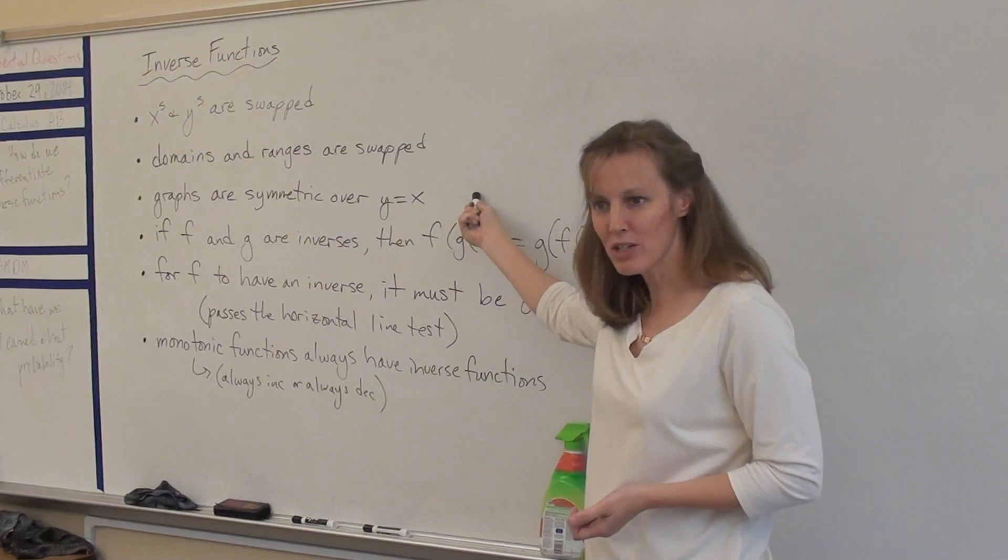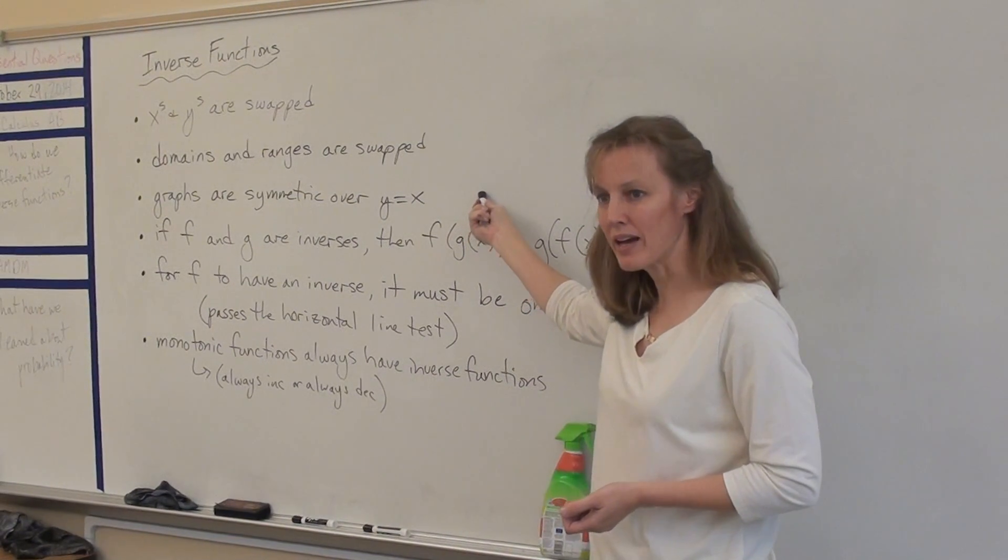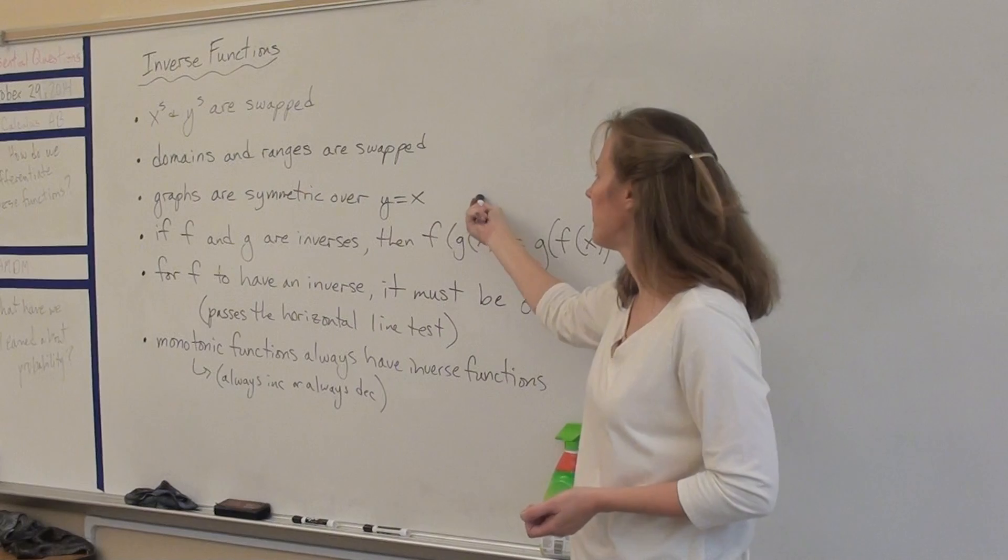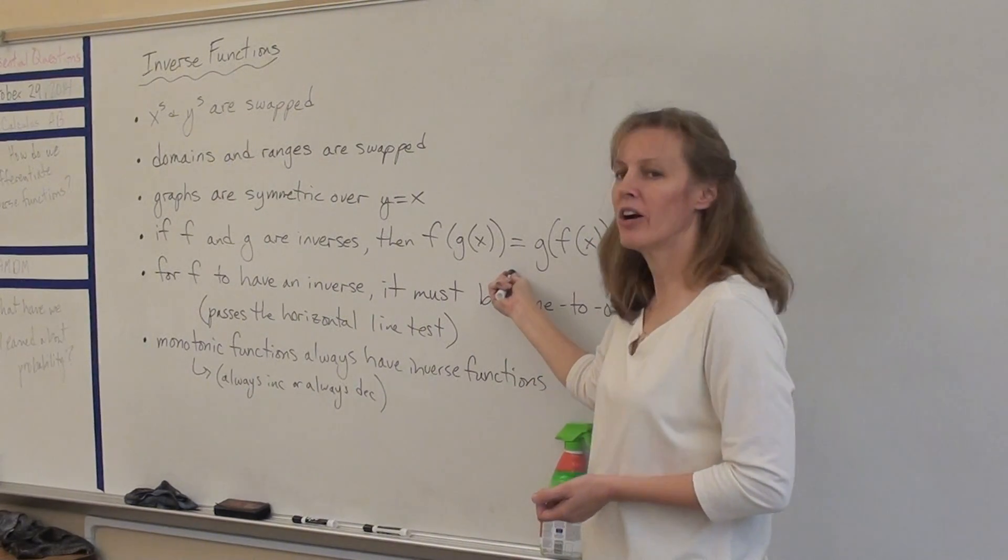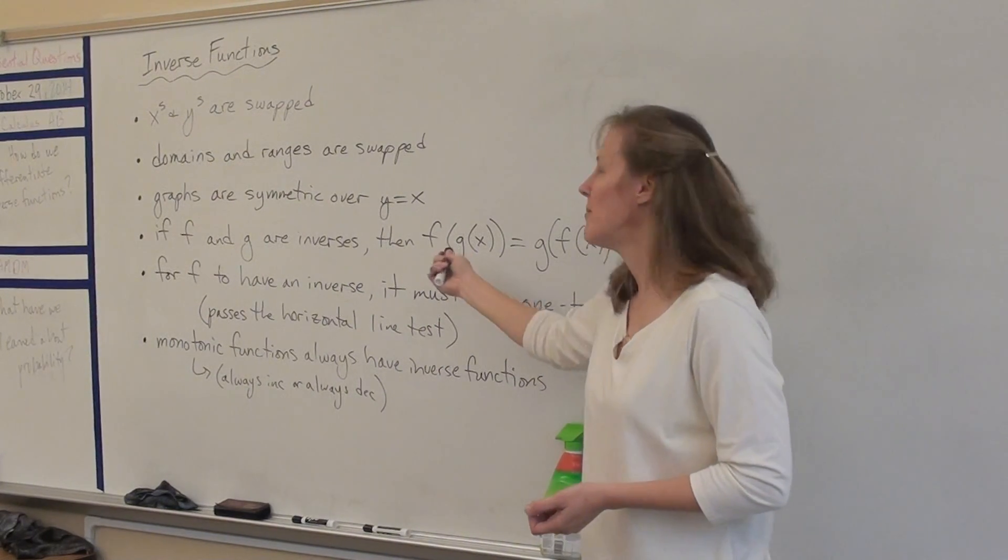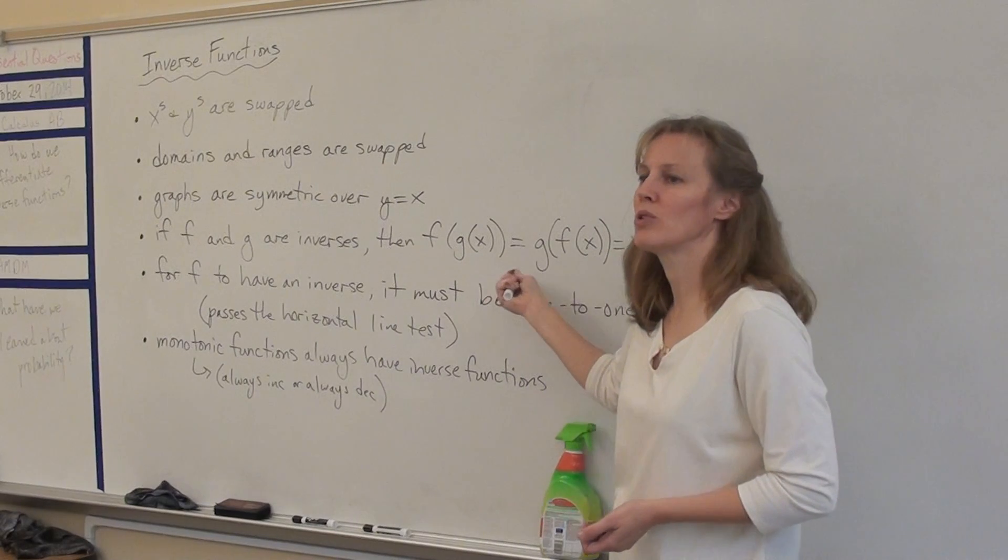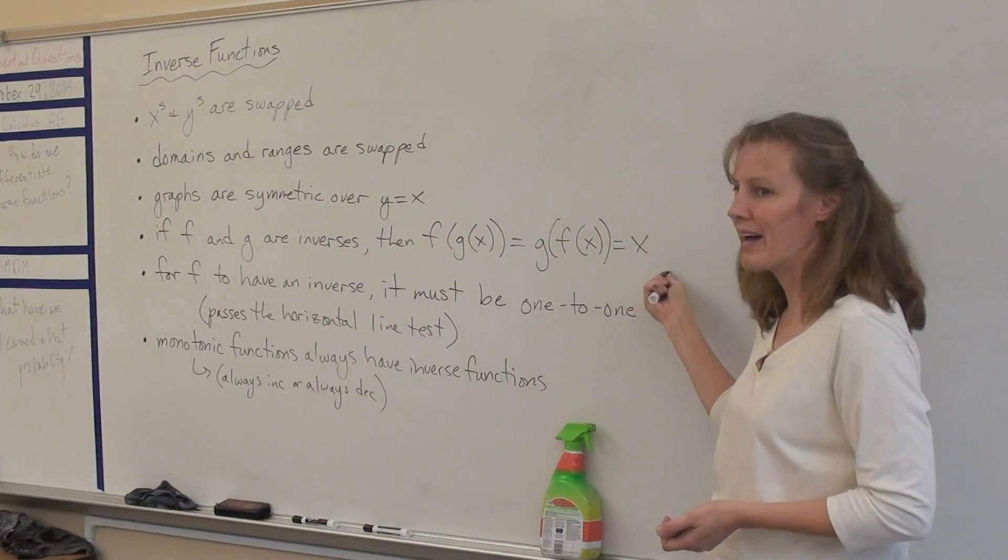The graphs are symmetric over the line y equals x, and we'll talk more about this in a minute. But if f and g are inverse functions, that means f of g of x equals g of f of x, which equals x.